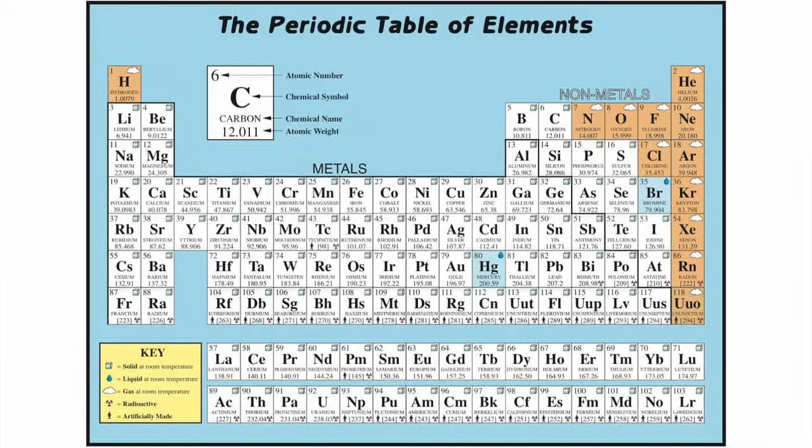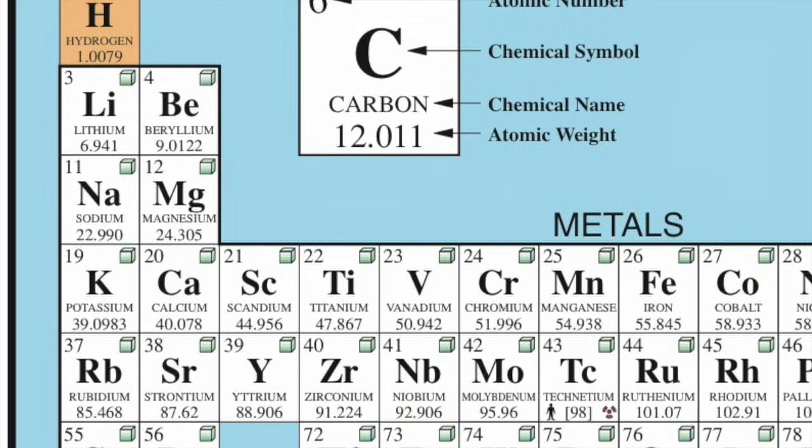The most important thing about the periodic table is how it's organized. Here's what biology students need to know. The number of protons in each element increases from left to right in each horizontal row.